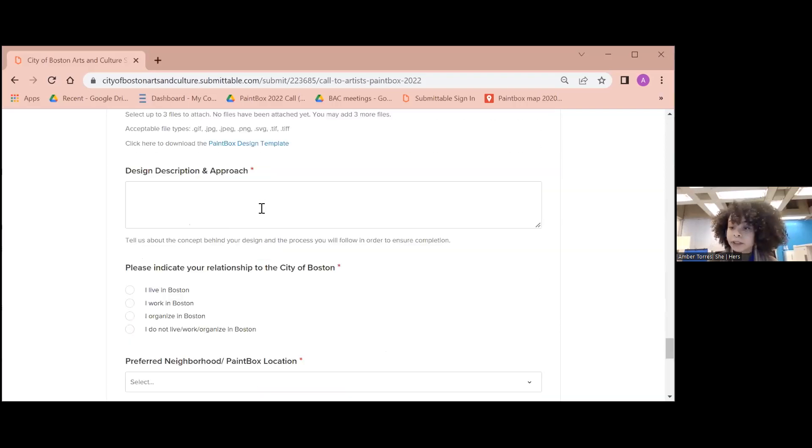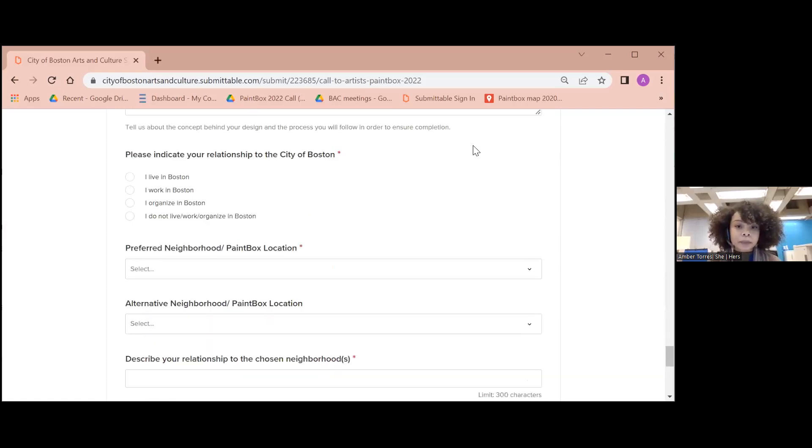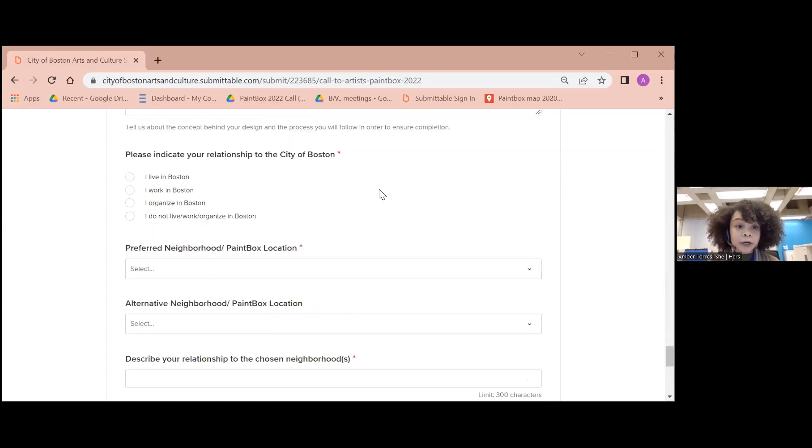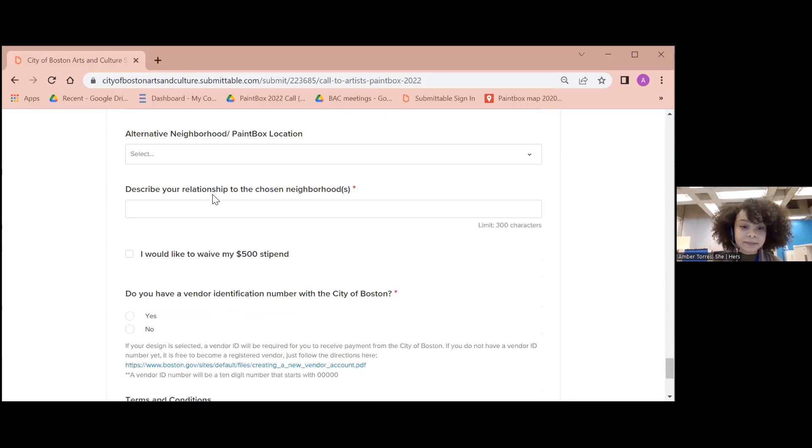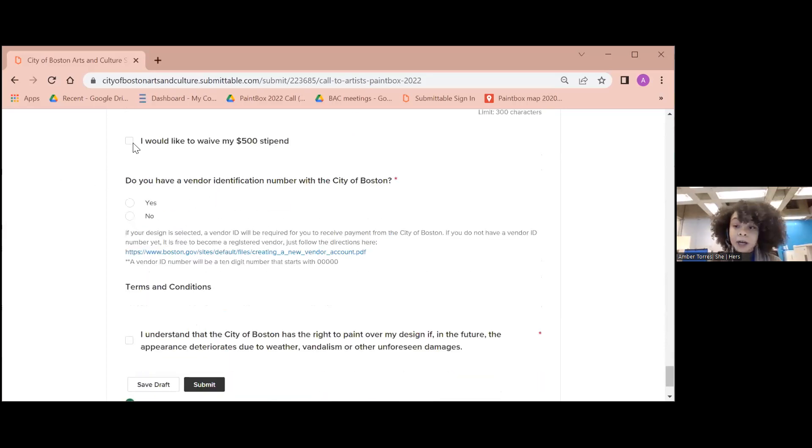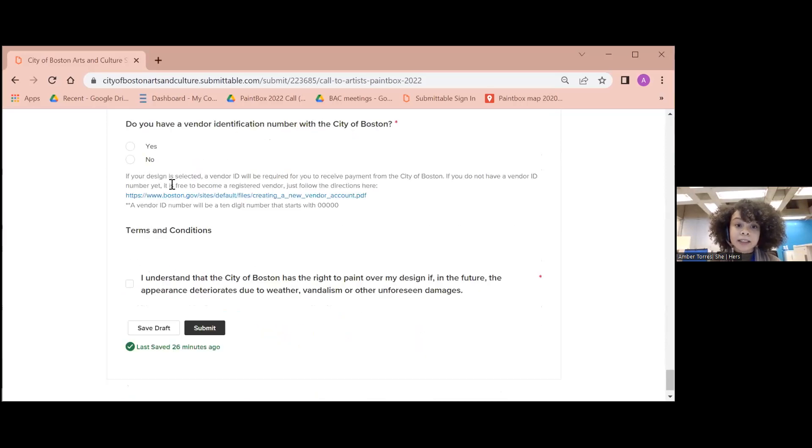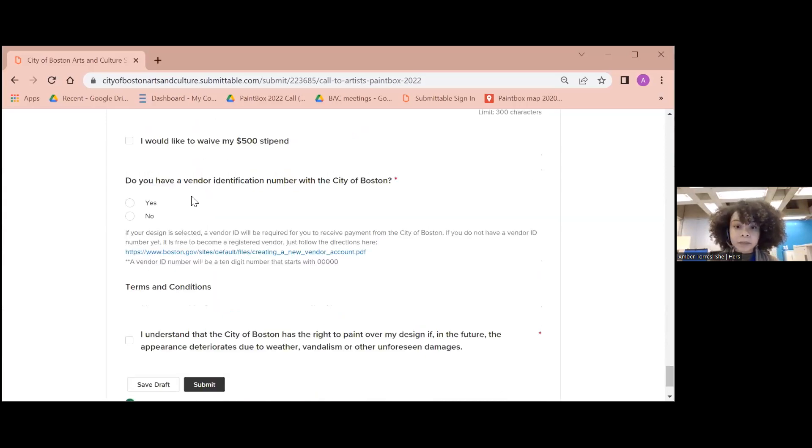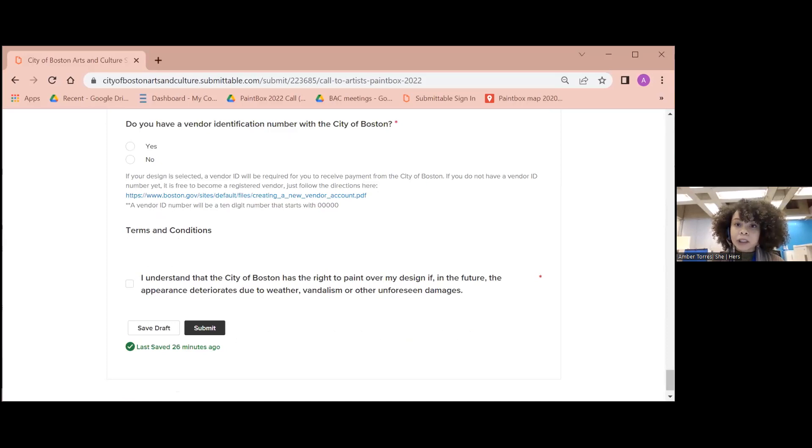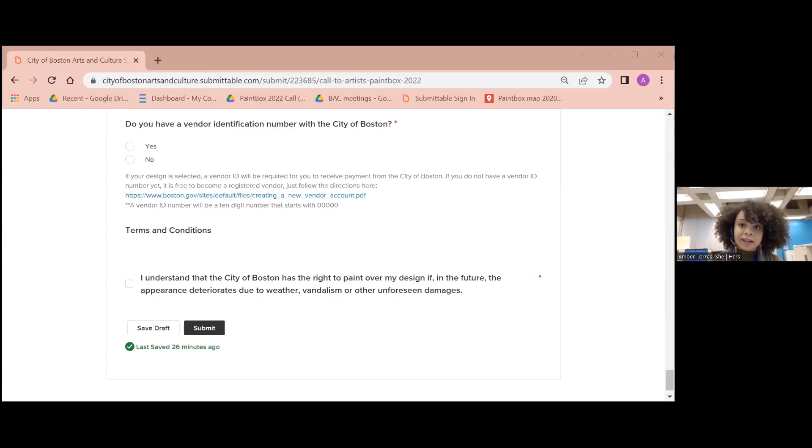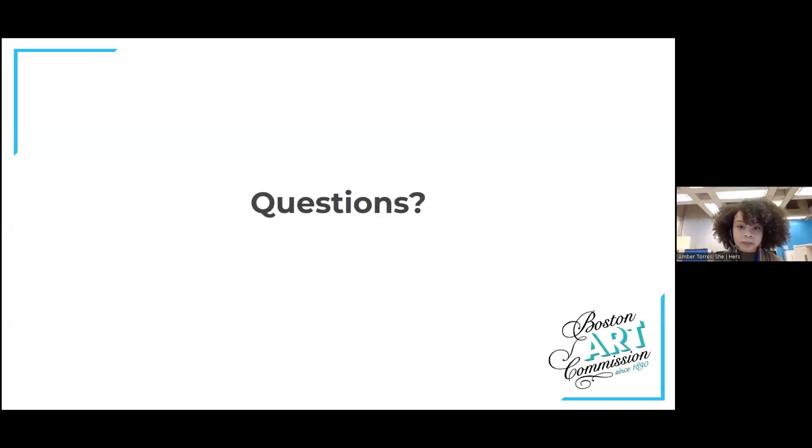And the next section asks for information on where you live, work, or organize in Boston, and the preference for neighborhood paint box location. Artists have the option to waive the $500 stipend and let us know if you might already have an existing vendor ID number. And then lastly, the terms and conditions that allow us to repaint the box if it is damaged. So I'm going to stop sharing this website. We'll put the PowerPoint back up just to invite any questions. Once again, you can use the Q&A form on Zoom, and we will get to them.